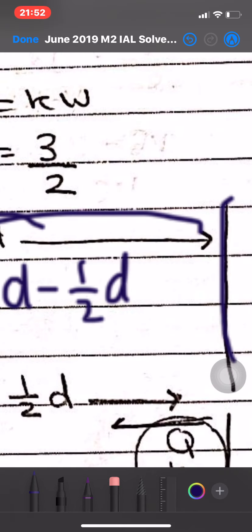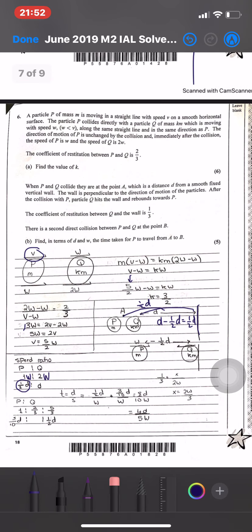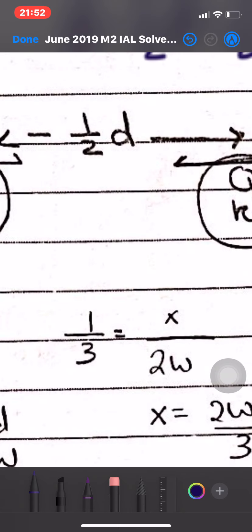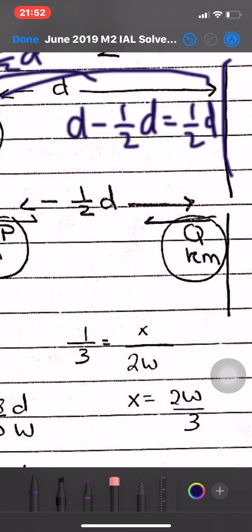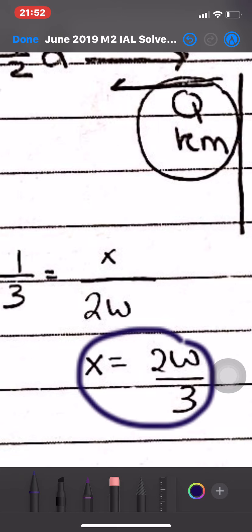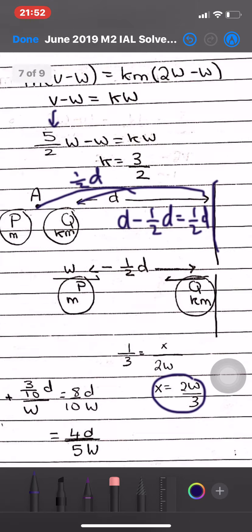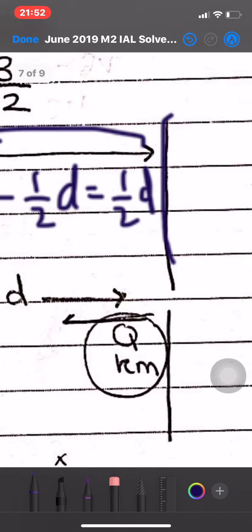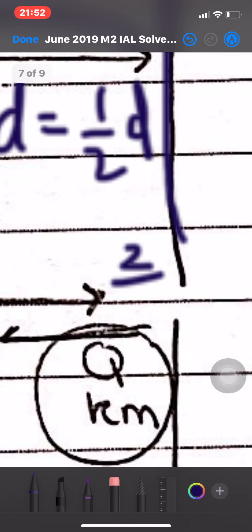The coefficient of restitution between Q and the wall is 1 over 3. From this, the speed of Q after hitting the wall: 1 over 3 equals X over 2W, where X is the speed after the collision. So X equals 2W over 3. The distance between the particles is half D.